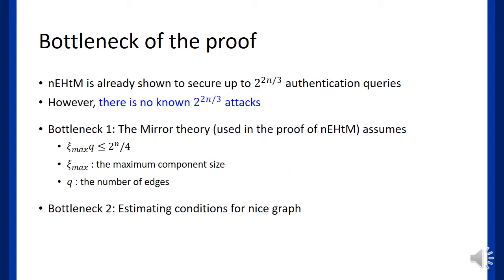Here are two bottlenecks of the proof. The first bottleneck comes from limitation of mirror theory. The mirror theory used in the previous proof assumed the following condition,